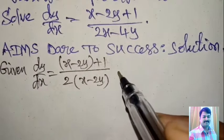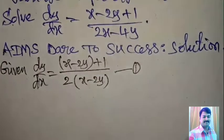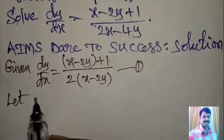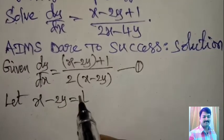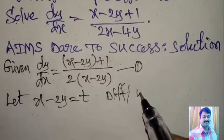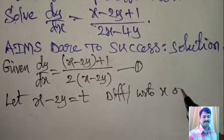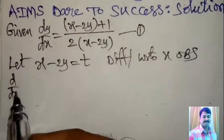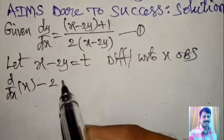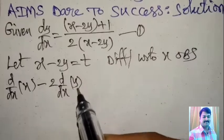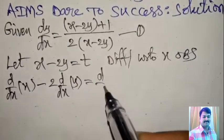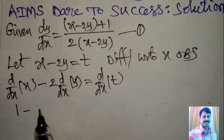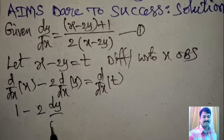The common value from numerator and denominator — I am taking x minus 2y equal to t. Applying differentiation with respect to x on both sides: d/dx of (x minus 2y) equals d/dx of t. So, derivative of x is 1, minus 2 times dy/dx equals dt/dx.